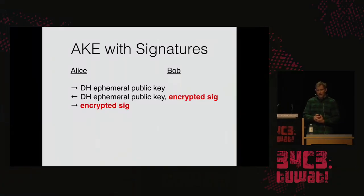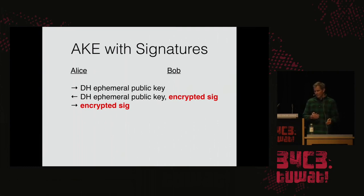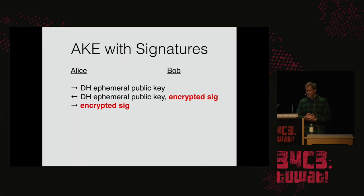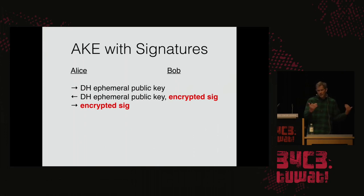To turn it into an authenticated key exchange we add authentication. We can do that by adding signatures in a conventional way. If both parties know each other's public keys, Bob sends an encrypted signature to Alice, Alice responds with an encrypted signature — now we have an AKE. This design is called Sigma, and it's essentially how TLS 1.3 works: first get a secret key, then send signatures as authenticators under the encryption.